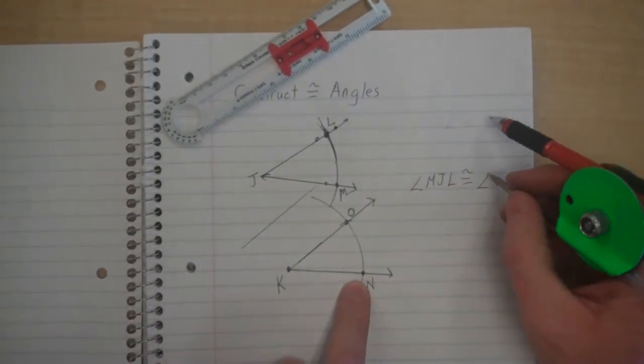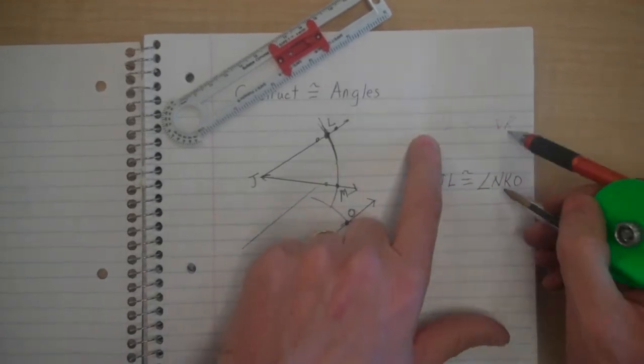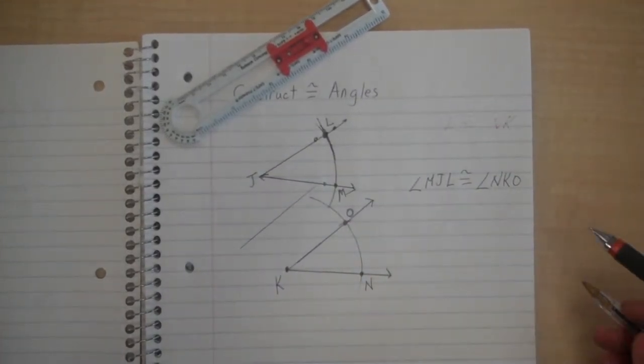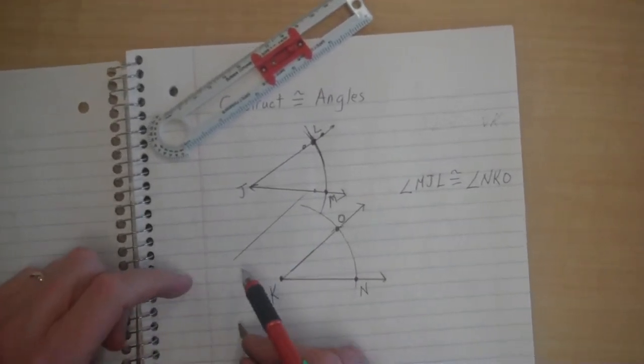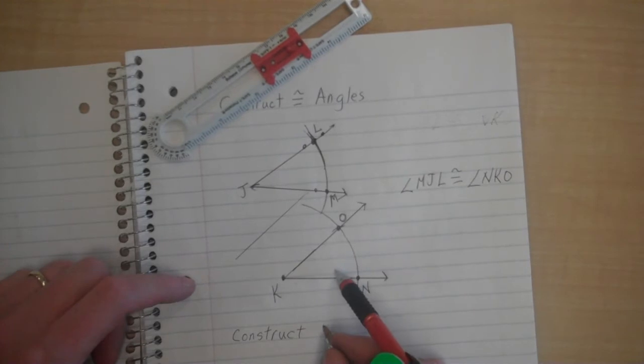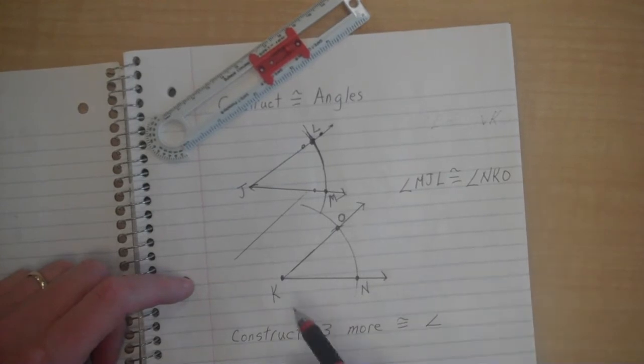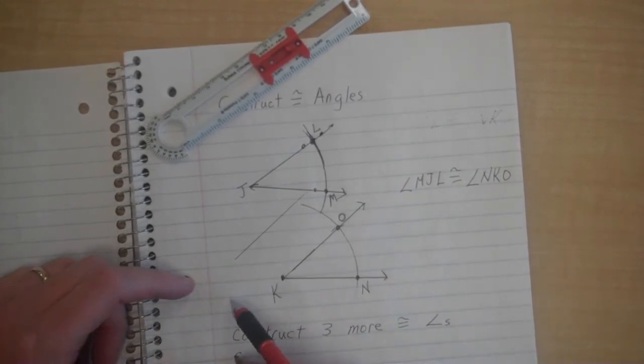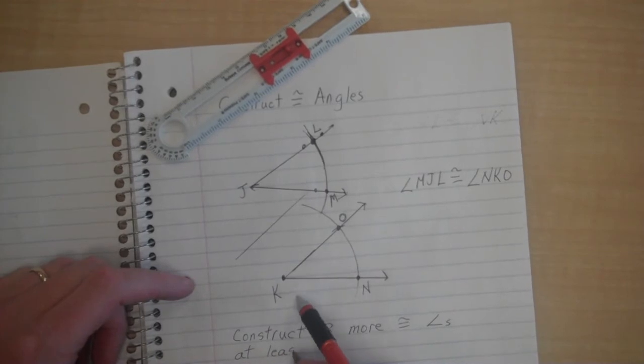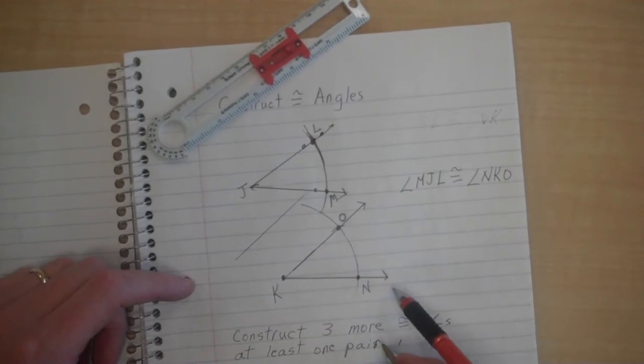We've constructed an angle congruent to it, and that is angle NKO. Let's construct for your practice three more congruent angles.